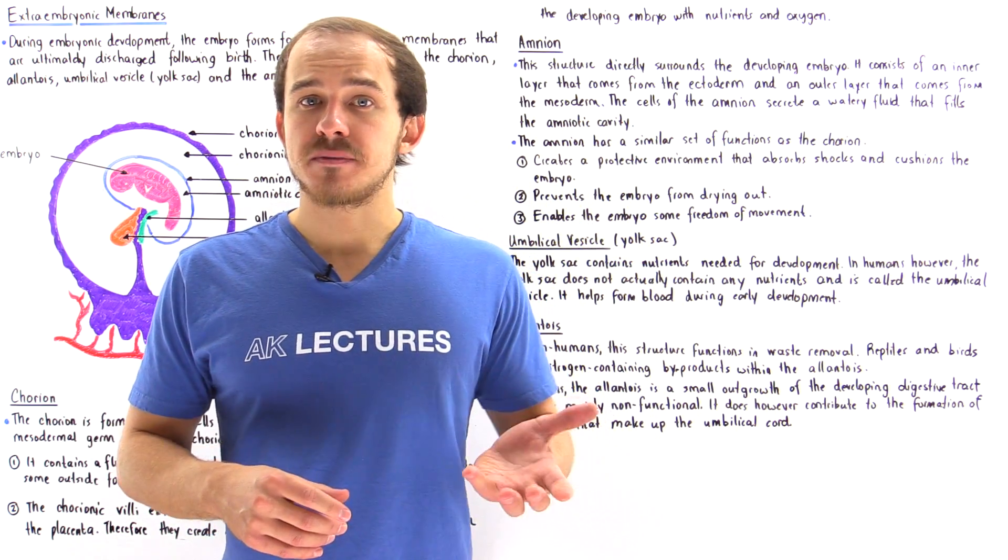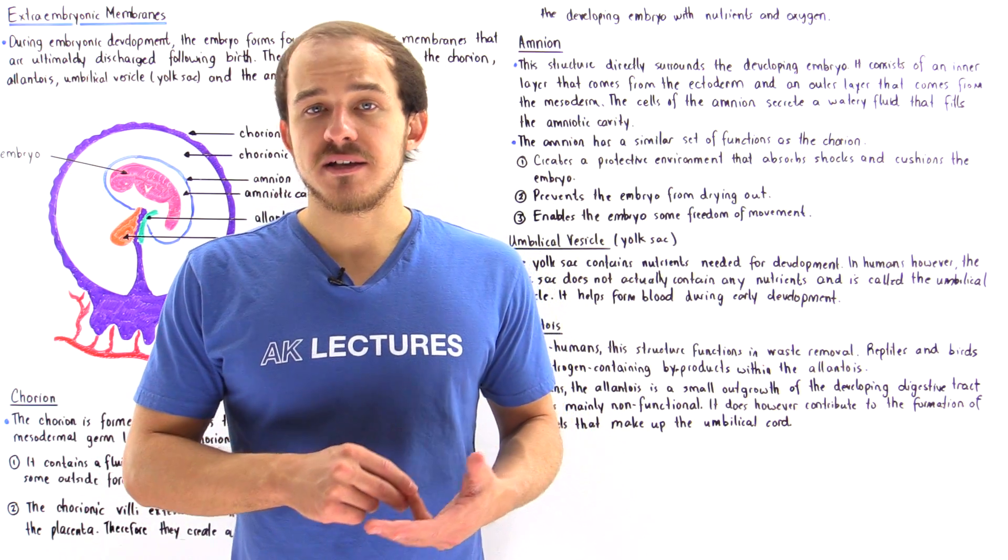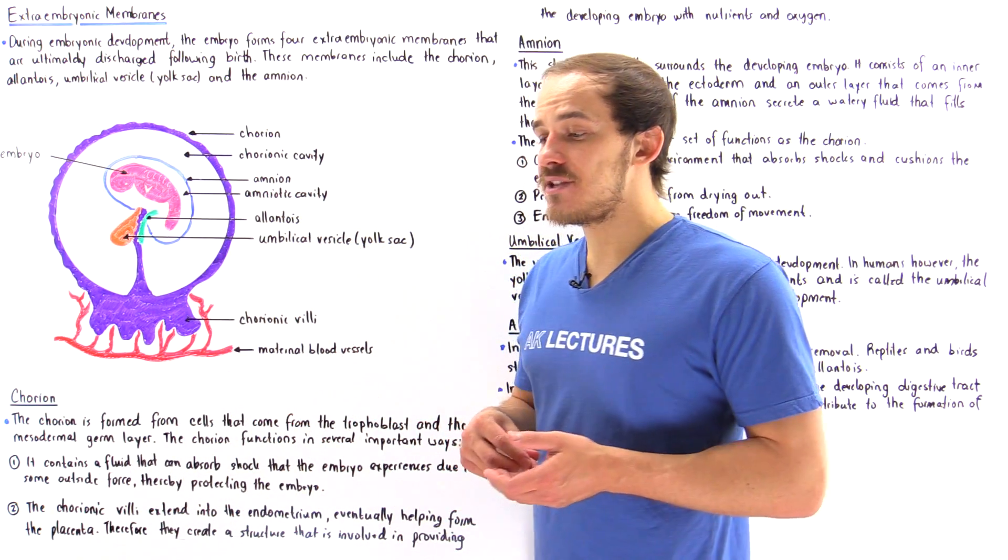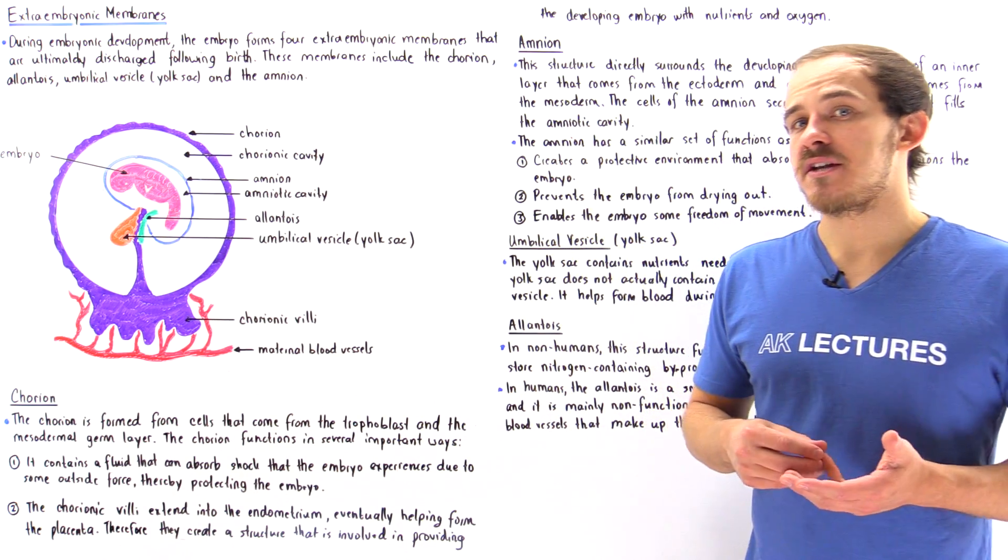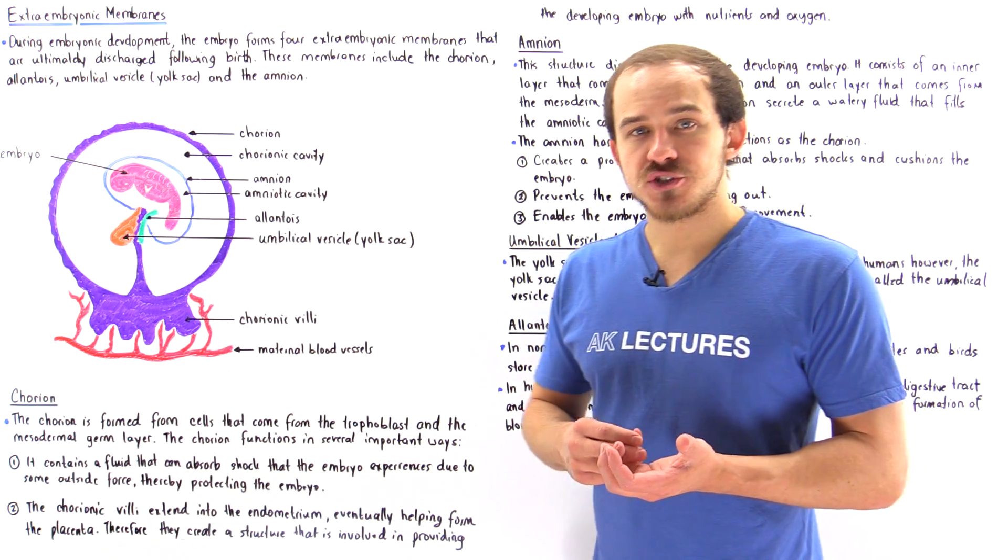And in animals such as reptiles and birds, the umbilical vesicle is actually called a yolk sac because it contains a nutritious substance made of lipoproteins known as yolk.